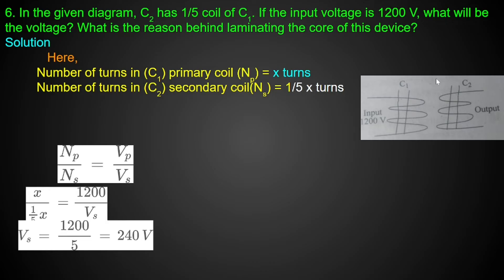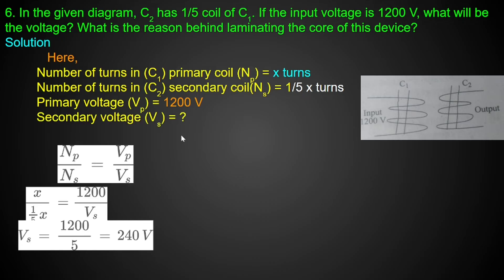C2 has 1/5 x turns, so Ns equals 1/5 x. Vp is 1200 volts and Vs is unknown. Using Np by Ns equals Vp by Vs, we substitute x by (1/5)x. The x terms cancel out, simplifying the calculation. We multiply through to find Vs.